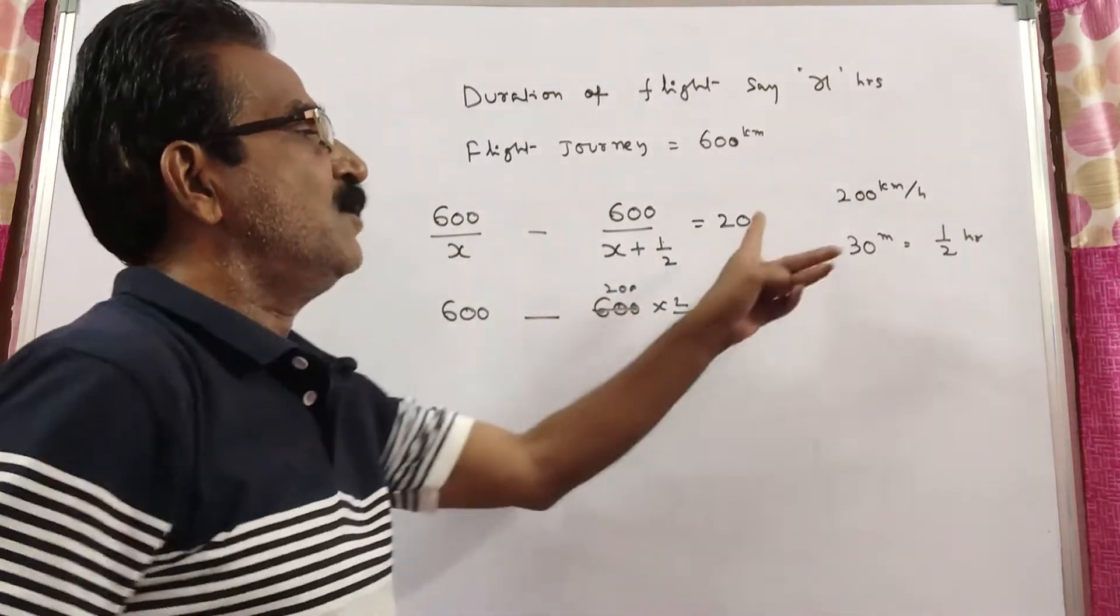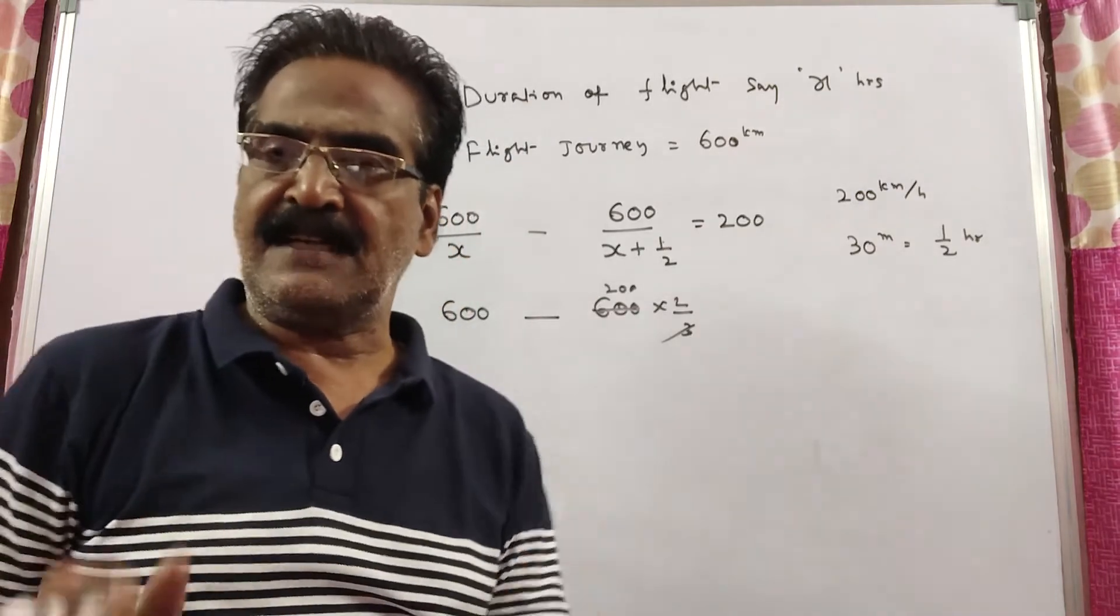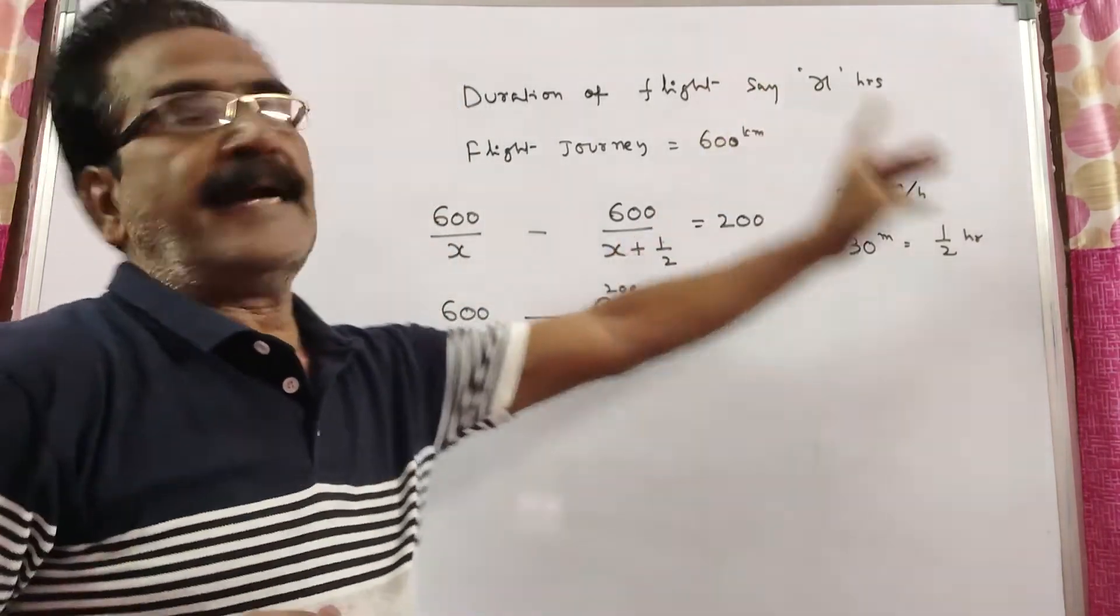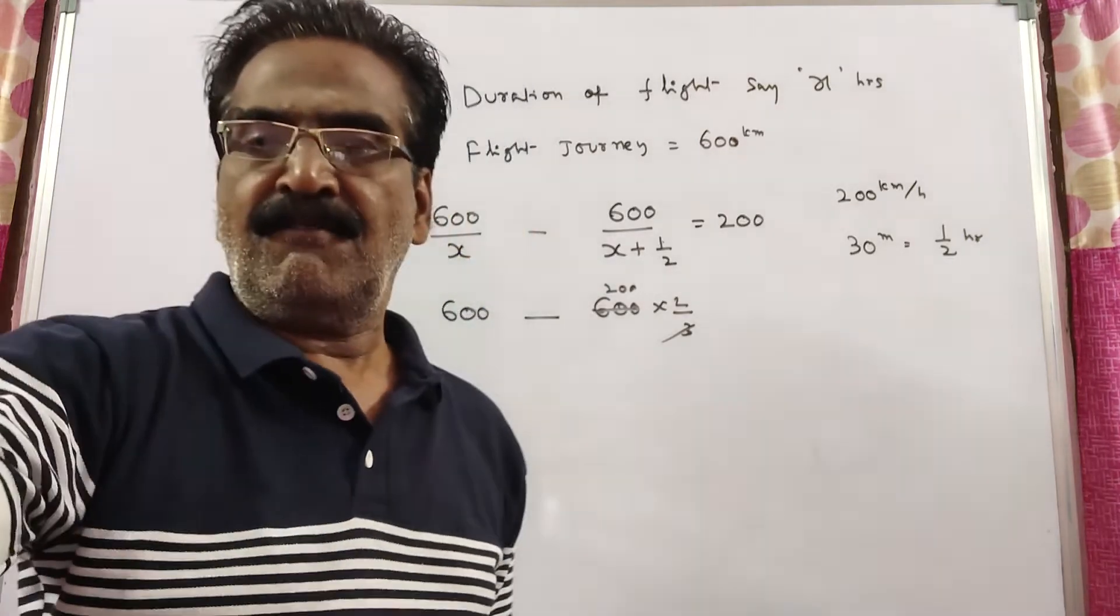The difference is 200 kmph. So the equation satisfies with the value of X equals 1 hour. Therefore, the actual flight duration is 1 hour. Thank you.